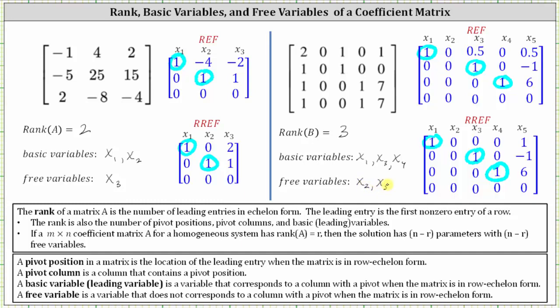Notice how the coefficient matrix has five columns and the rank is three. Five minus three is two, and we have two free variables, which also indicates the corresponding homogeneous system has a solution with two parameters. I hope you found this helpful.